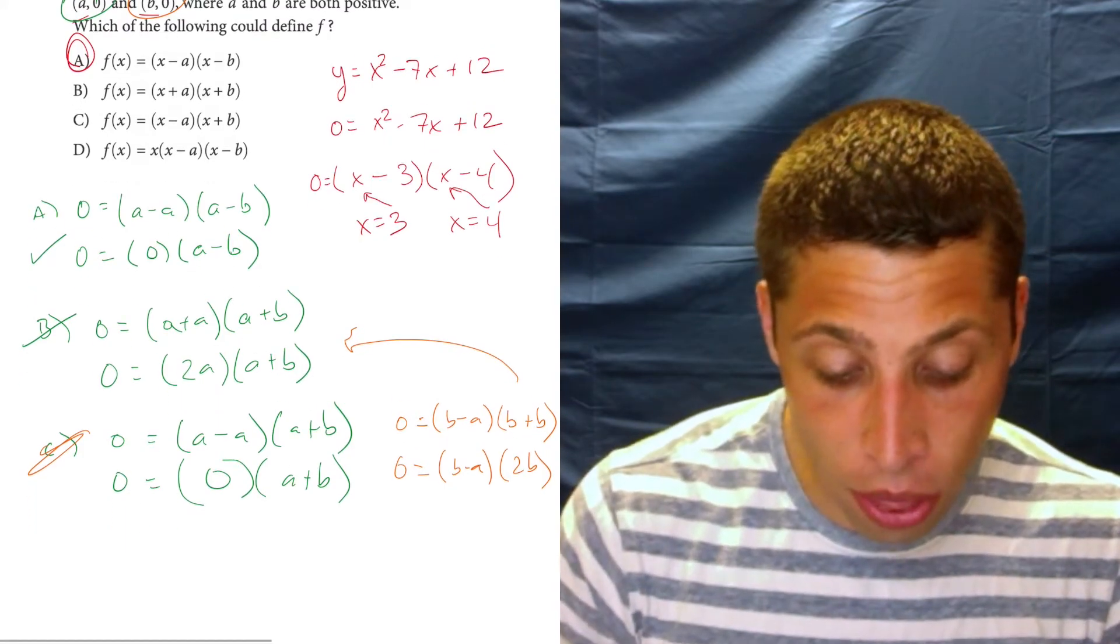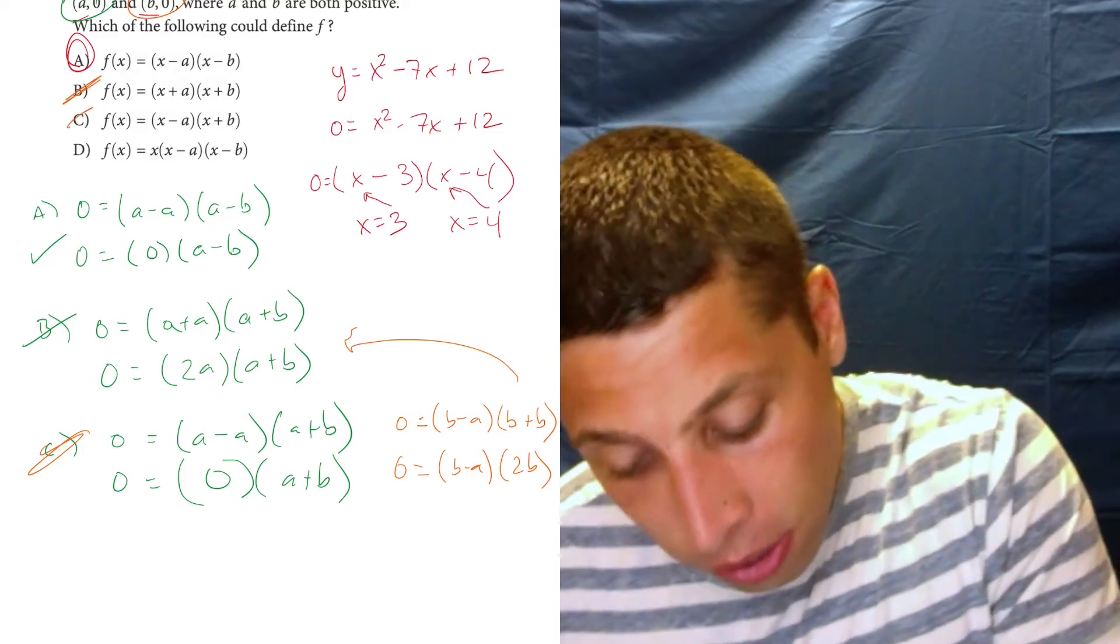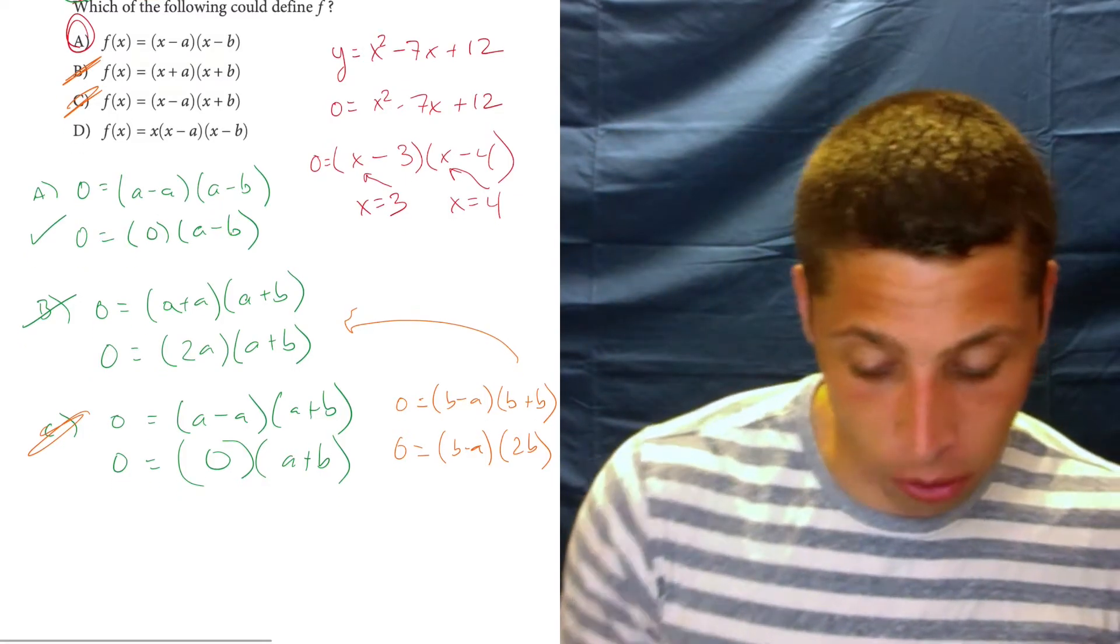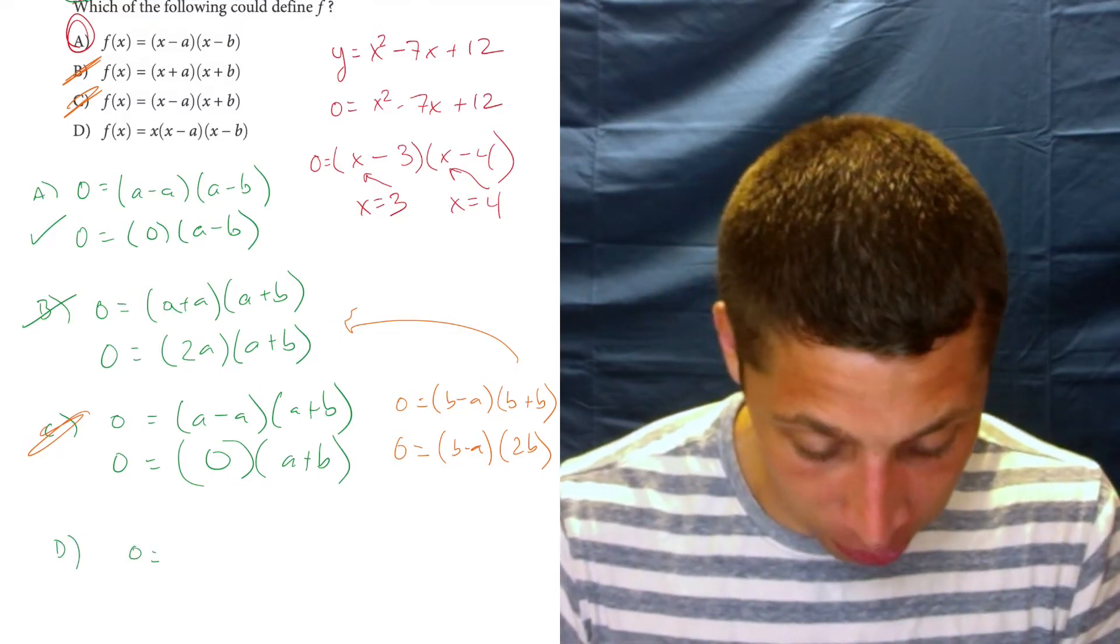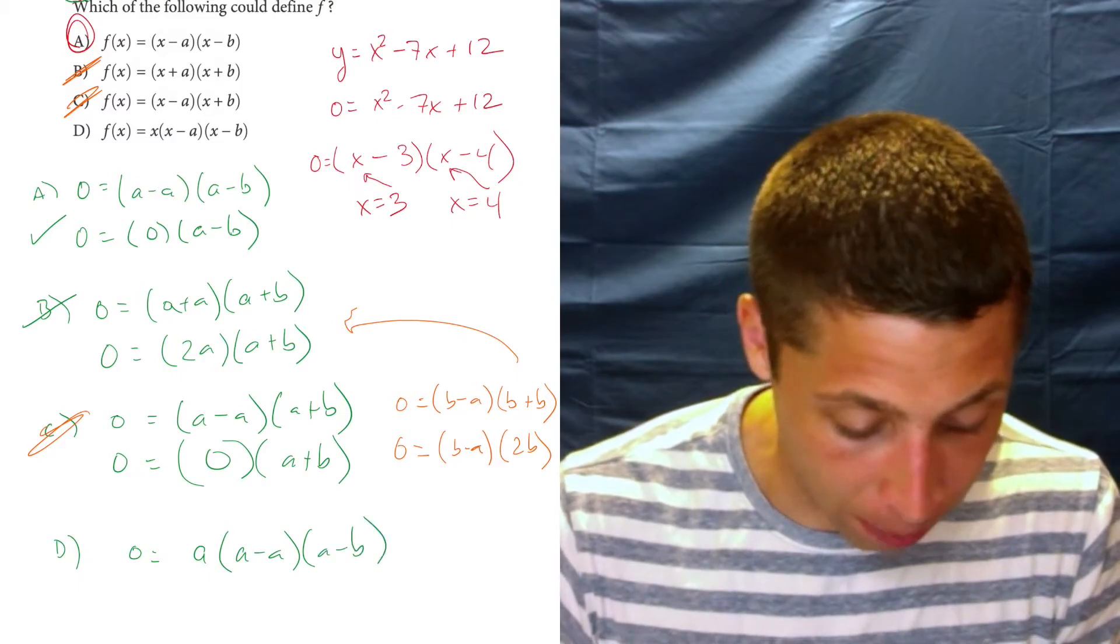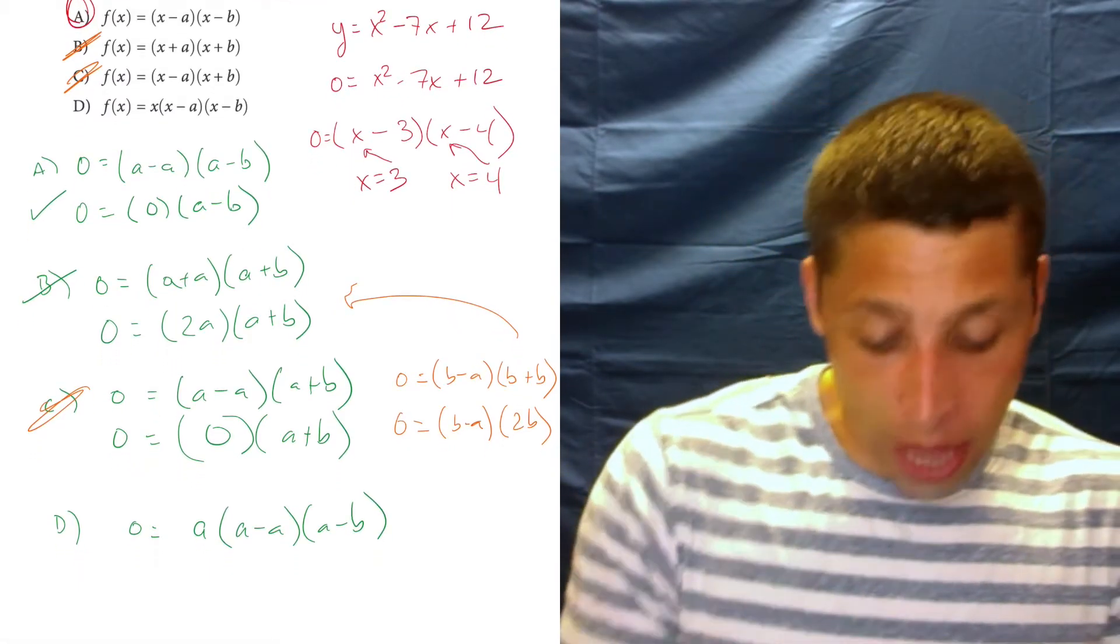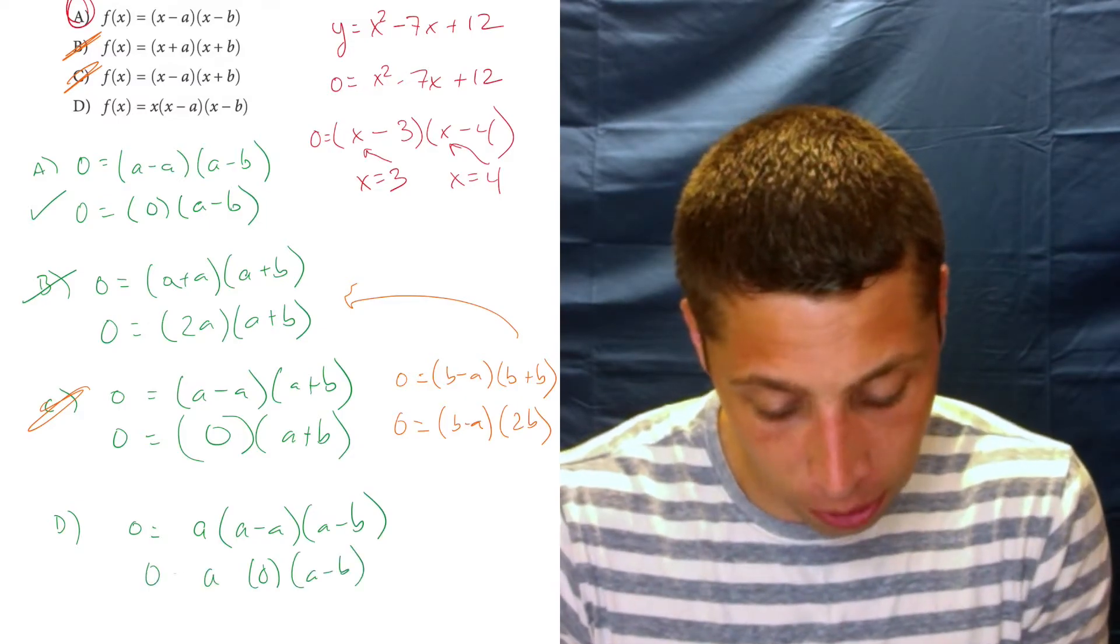Hopefully, we recognize that just in plugging them in, and even though it's going to kind of work in d, this is where things get a little bit more advanced, right? So if we plugged it into d, we'd have 0 is equal to a, a minus a, a minus b. So that does get me a 0, and it would work the same for the other choice.